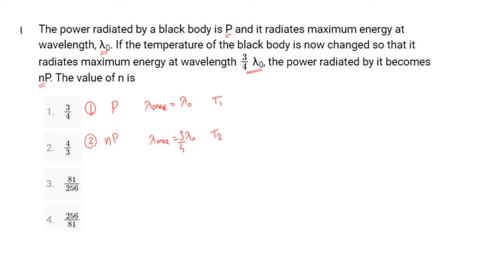From Stefan's Law, intensity or power per unit area equals sigma T to the 4th. Since nothing is mentioned about emissivity, we take emissivity a equal to 1. So power is proportional to T to the 4th.